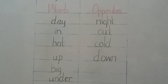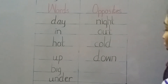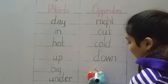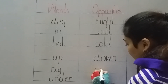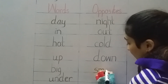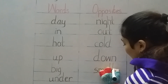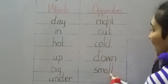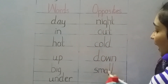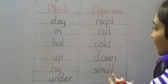Our next word is Big — Bada. The opposite is Small — Chota. S-M-A-L-L, Small. All of my L's have no tail. Don't write a tail for the L. Your alif and your L should look the same.